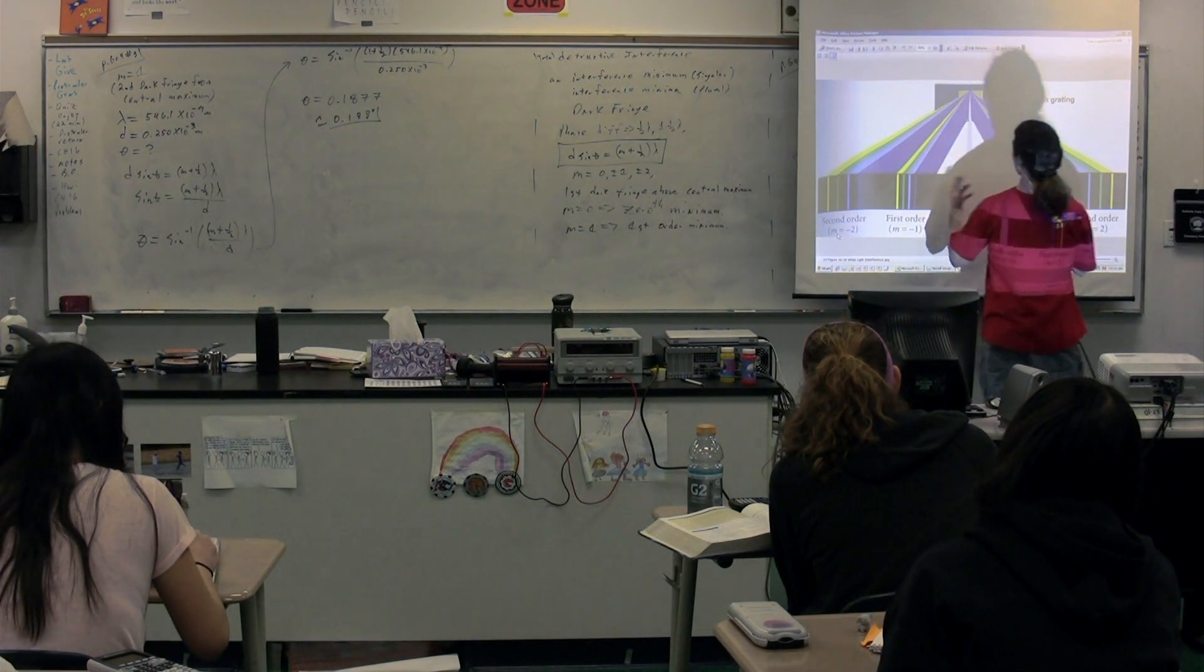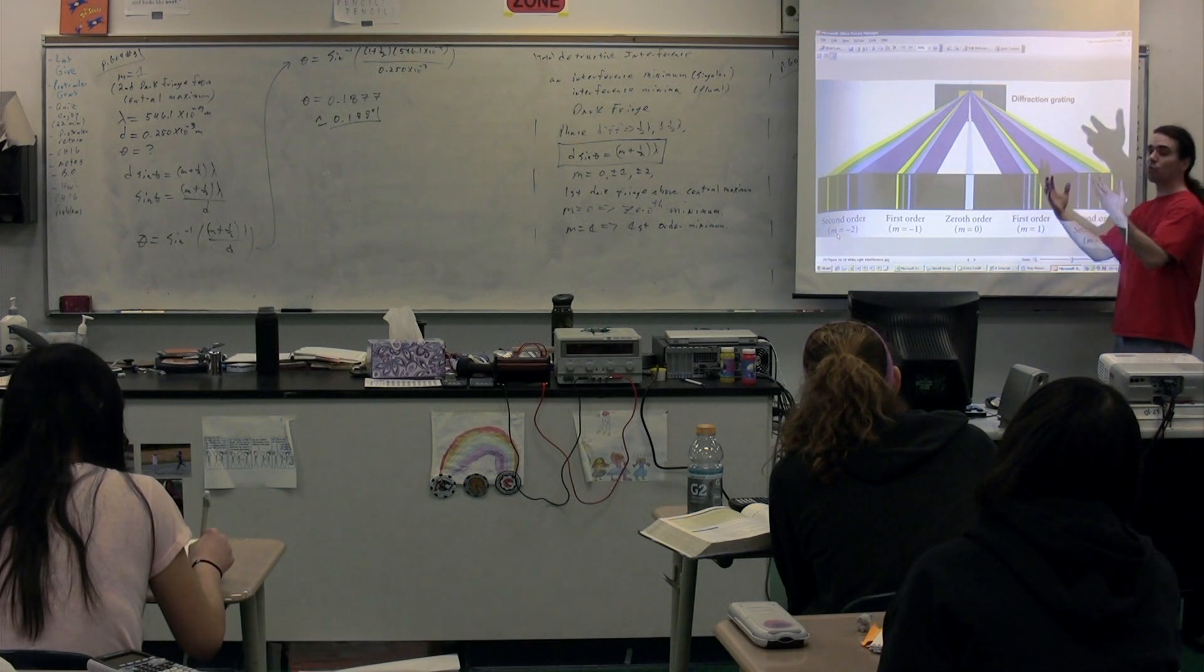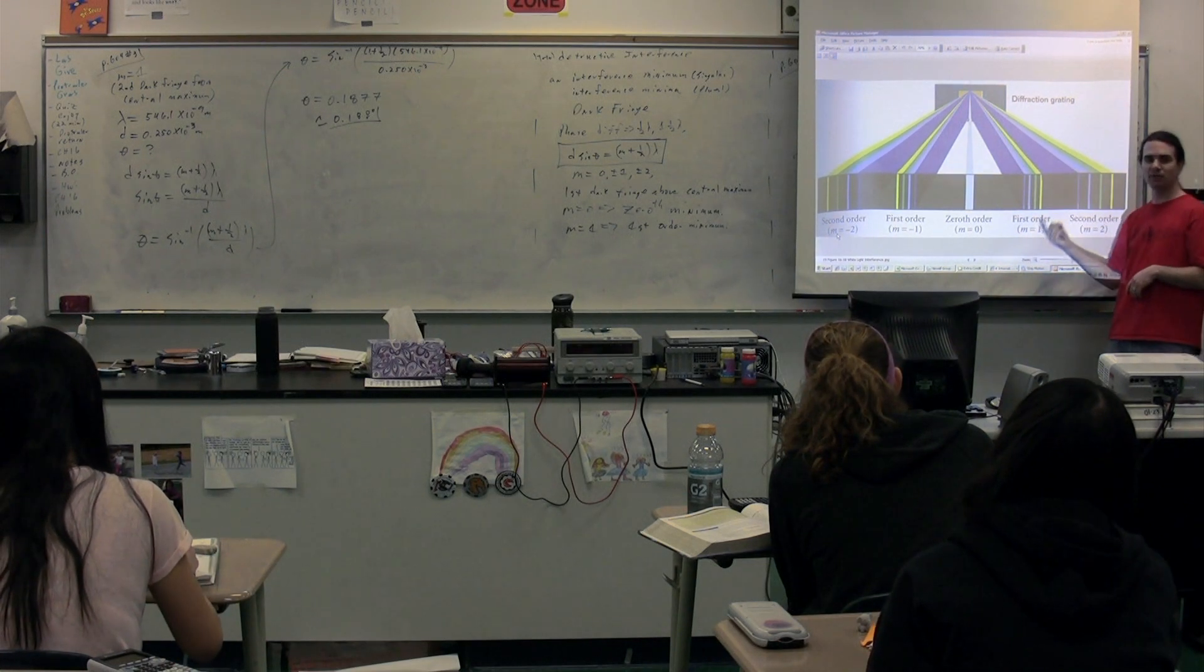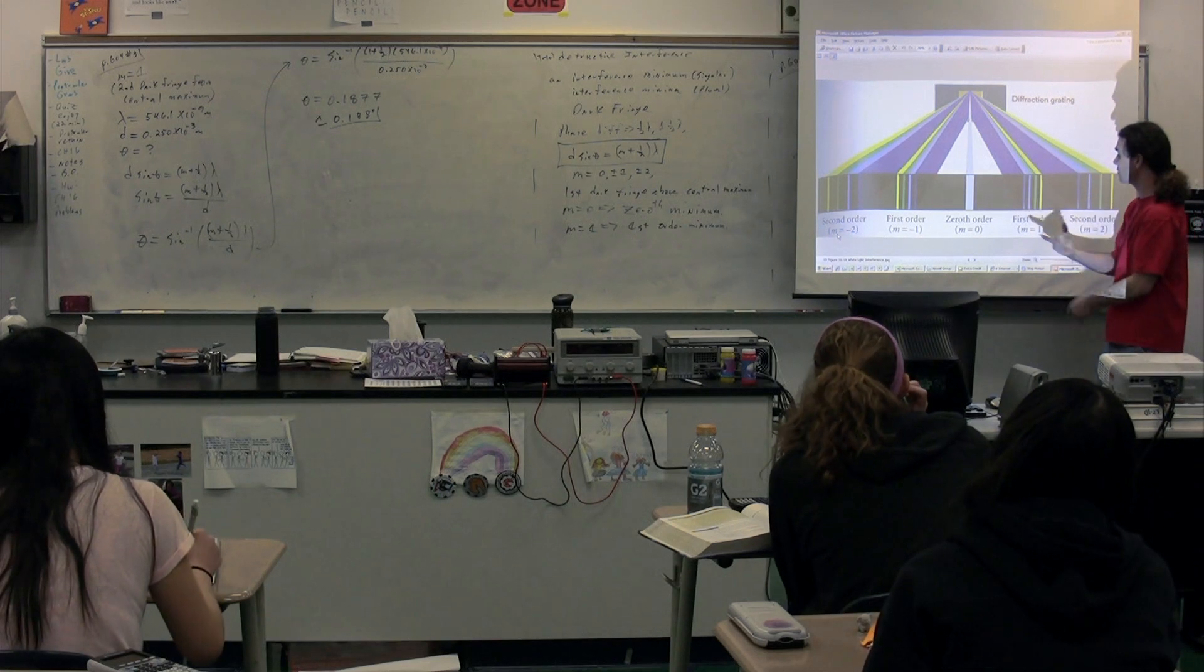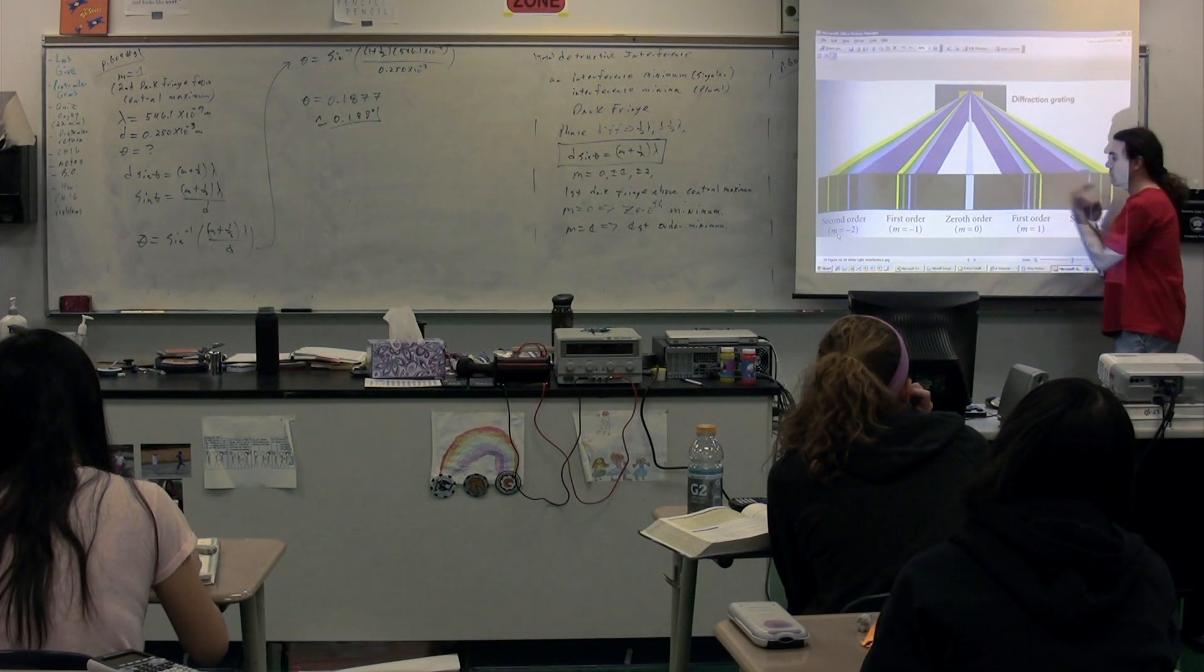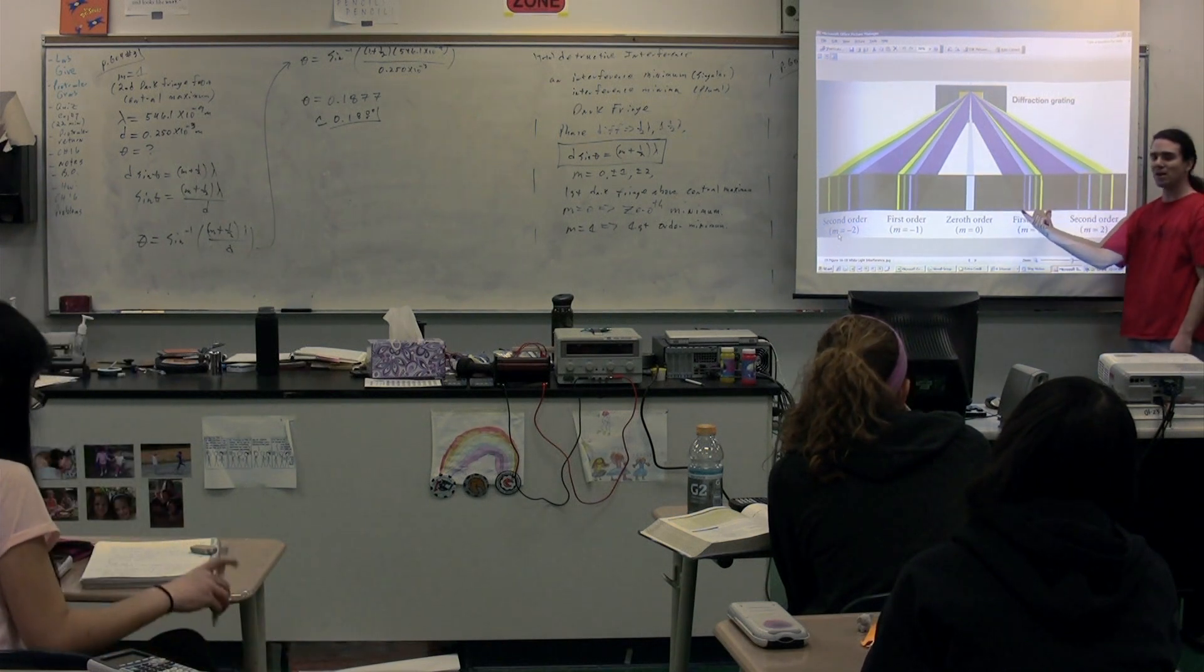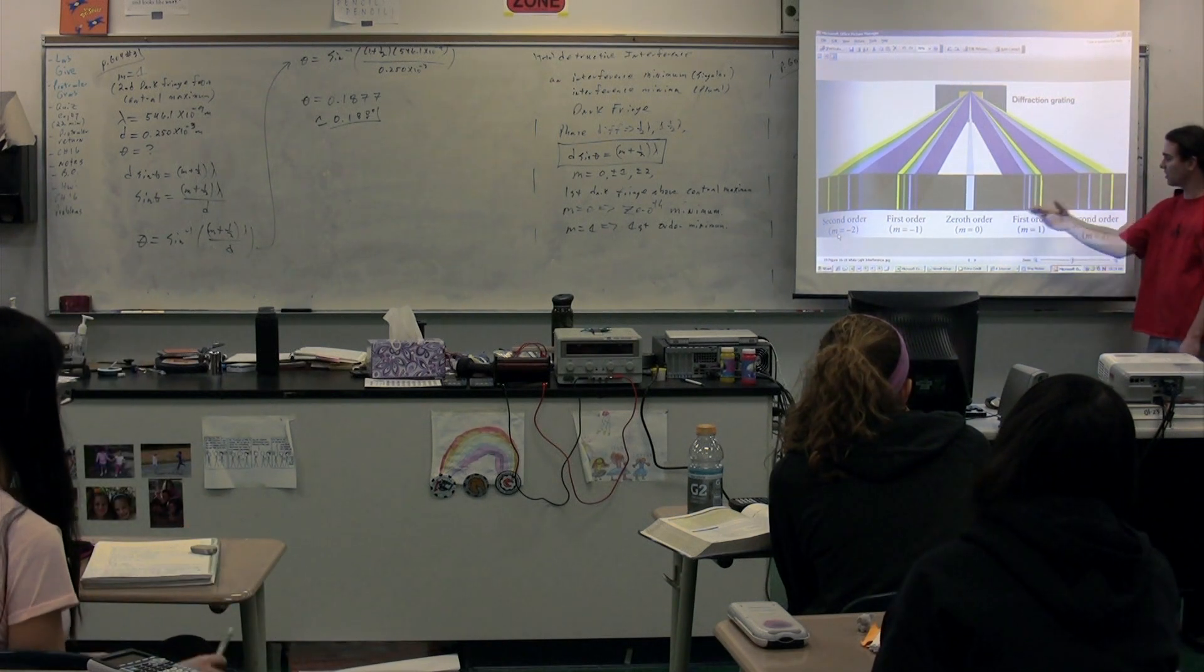And what we get is the same thing we had before, only with white light, we're actually separating it into its constituent colors, because different light waves are going to be diffracted at different angles. So, you can see this is going to be our first order maximum. This is going to be our second order maximum, and so on and so forth. But you can see we get the rainbow effect of all the different colors.